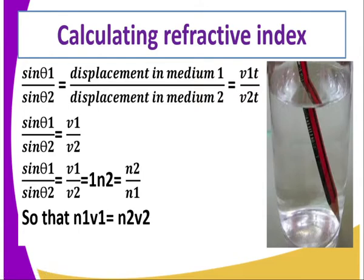Remember from Snell's law: sine i over sine r — that is, the sine of the angle of incidence divided by the sine of the angle of refraction — is given by the displacement in medium 1 divided by displacement in medium 2, which is equivalent to the velocity of light in medium 1 per unit time divided by the velocity of light in medium 2 per unit time.